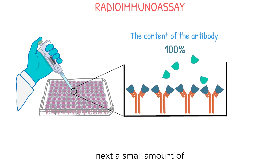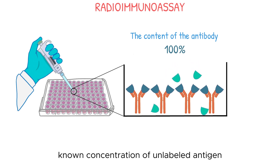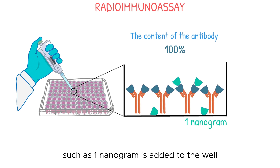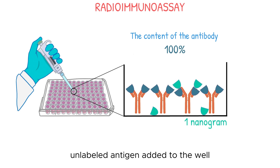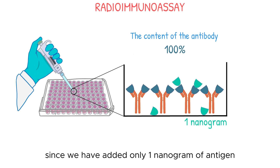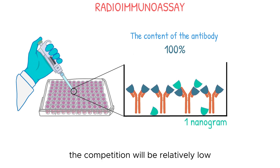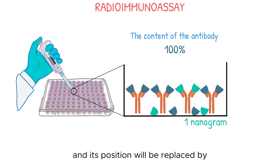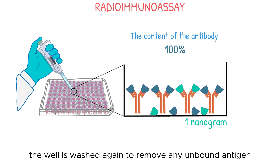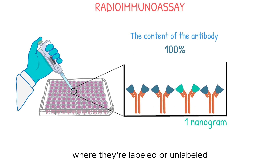Next, a small amount of known concentration of unlabeled antigen, such as 1 nanogram, is added to the well. This addition causes competition between the labeled and unlabeled antigens to bind to the antibody, and this competition is proportional to the concentration of unlabeled antigen added to the well. Since we have added only 1 nanogram of antigen, the competition will be relatively low, and a small amount of labeled antigen will be removed from the antibody, and its position will be replaced by the unlabeled antigen. After this step, the well is washed again to remove any unbound antigen, whether labeled or unlabeled.